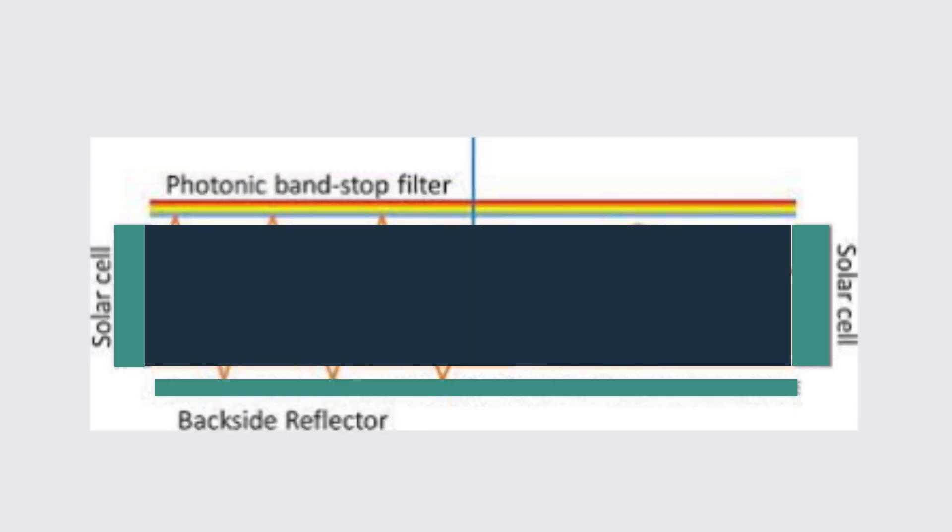Through a reasonable design, some of the light irradiating in the space between cells can be projected onto the surface of the battery again, after being reflected twice by the backplate and glass, so that the output power of the PV panel can be increased.